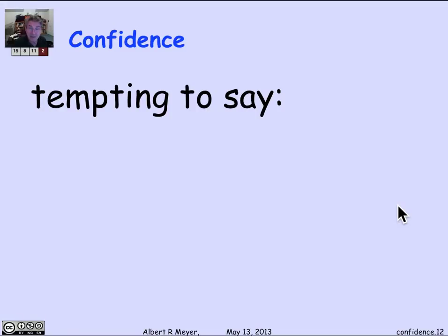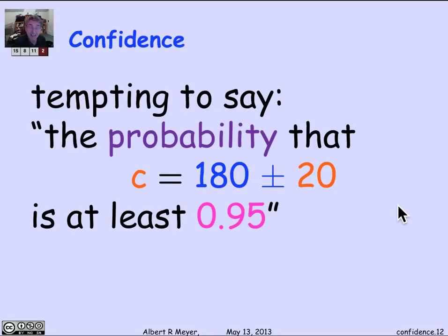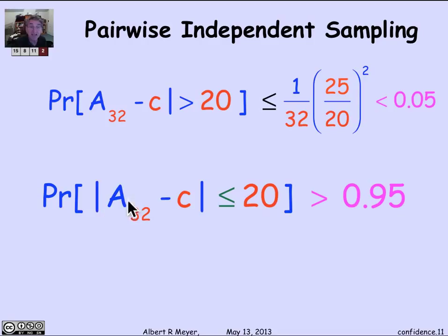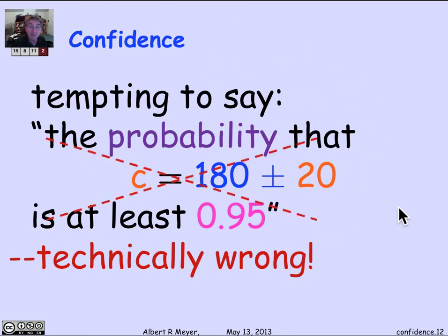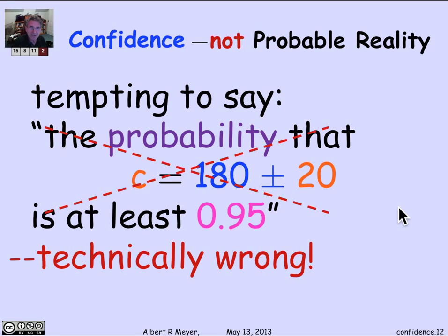We would like to say that the probability that the unknown C is 180 plus or minus 20 is at least 95%. That seems to be what the theorem told us. The theorem says the probability that A_32 minus C is less than or equal to 20 is greater than 0.95. So we should tell the EPA that C is less than 200 with probability 0.95. We'd be pretty tempted to say that, but it's not right. It's technically the wrong thing to say.